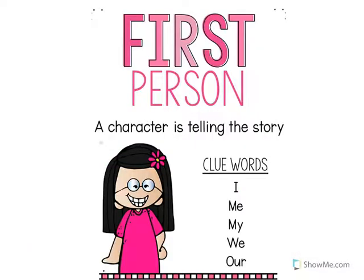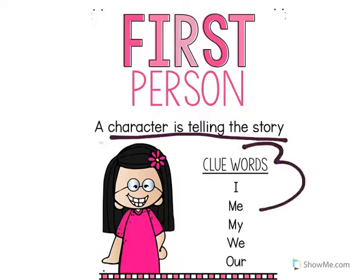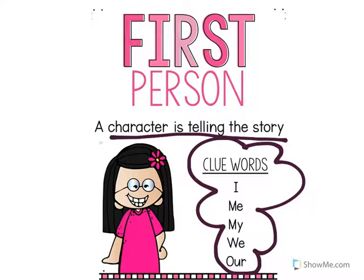First person is when a character is telling the story, and there are some major keywords — clue words — that are really going to stick out and help you recognize whether it's first person. Some of these words are I, me, my, we, and our. Of course there are many others, but those are what I call the biggies.